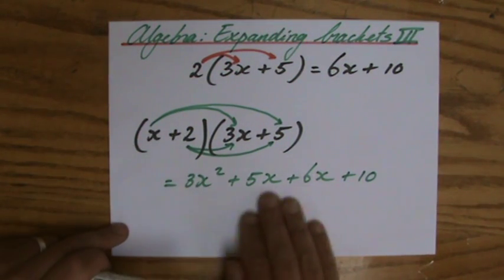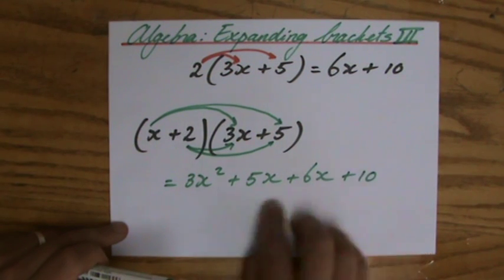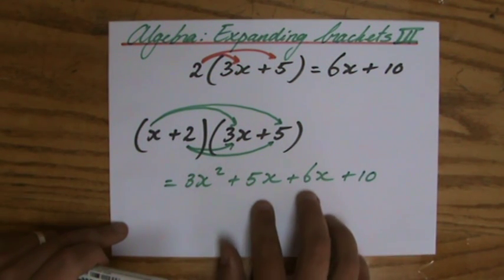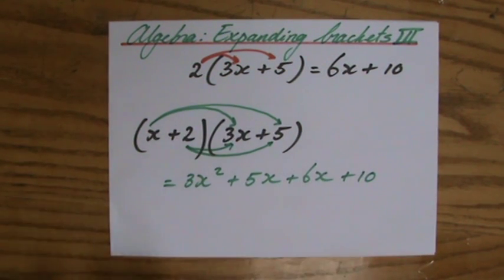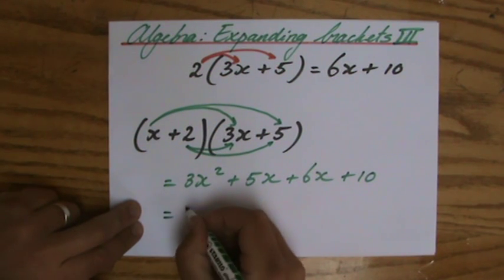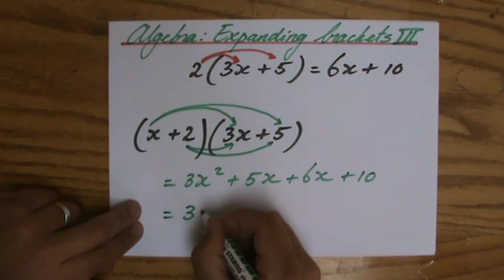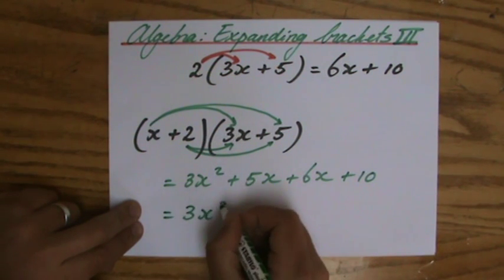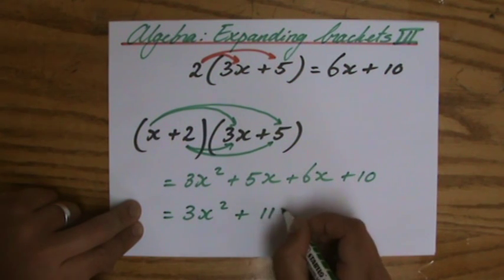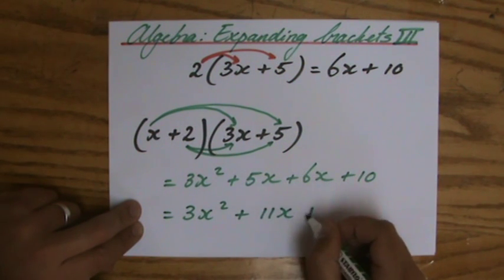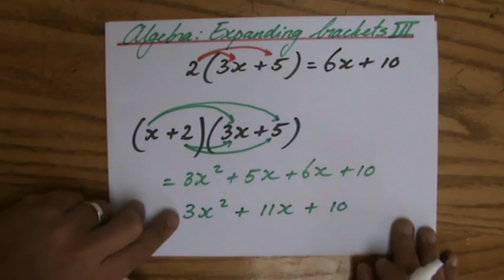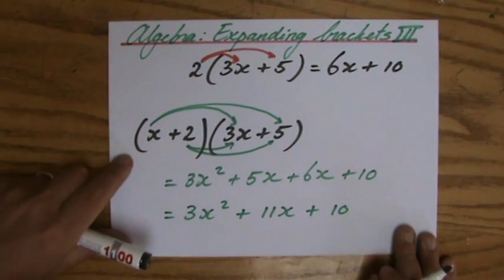Looking at the expression after expanding, I have two like terms in the middle, so I also have to simplify it. My final answer is 3x squared plus 11x plus 10. Now I do not have any like terms.